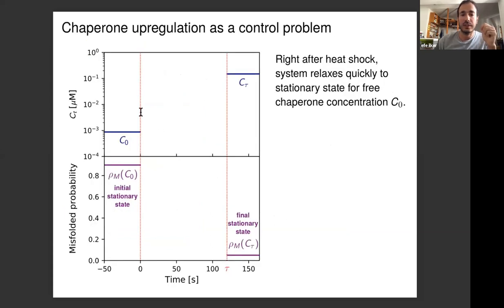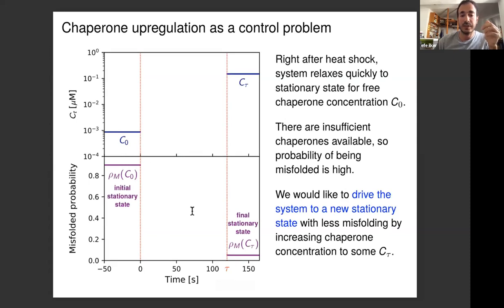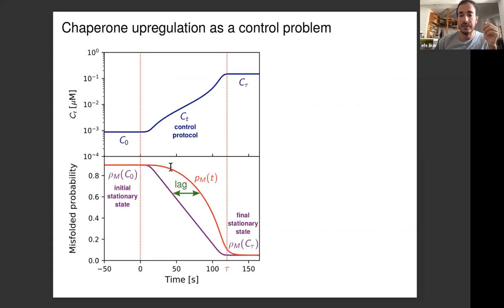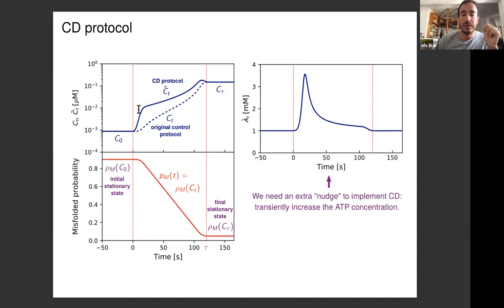We model the system as a discrete Markov model, separated by timescales into a four-state model. Transition rates depend on chaperone concentration and ATP concentration — these are our tuning knobs. Right after heat shock, the system relaxes to a pre-chaperone state, and with insufficient chaperones at high temperature, the misfolded fraction grows. We want to drive the system to a lower misfolded fraction to prevent aggregation. The long-time equilibrium gives the required final chaperone concentration.